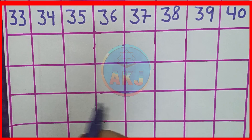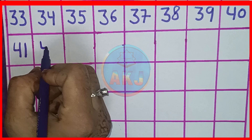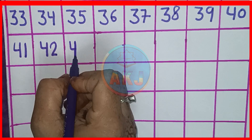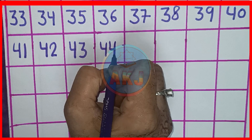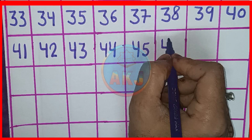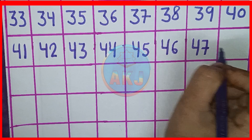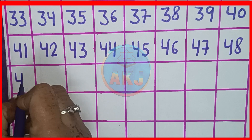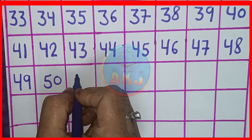Ab aachate ae bachyo next line pe. 41, 42, 43, 44, 45, 46, 47, 48, 49, 50.